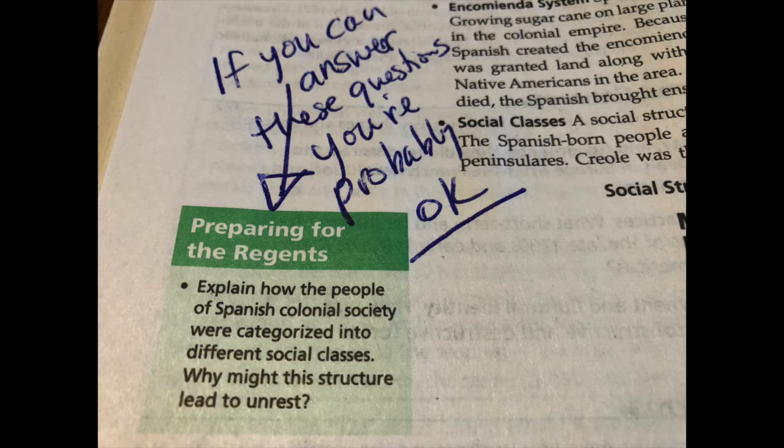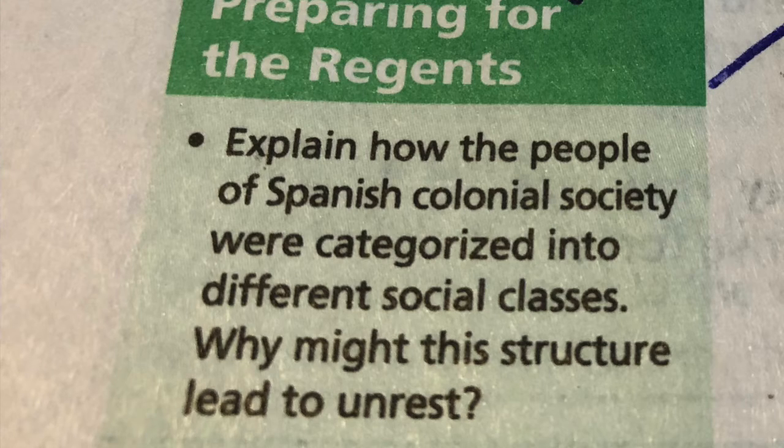One of the cool things your review book does is it has sections like 'Preparing for the Regents' — a little box on the side of the page. After I've read a section, if I can answer those types of questions, I'm probably okay. The question says: 'Explain how people of Spanish colonial society were categorized into different social classes. Why might this structure lead to unrest?' For the rest of this, I'm going to teach you about Latin American revolutions and the independence movements using three names: Toussaint L'Ouverture, Simon Bolivar, and José de San Martín.